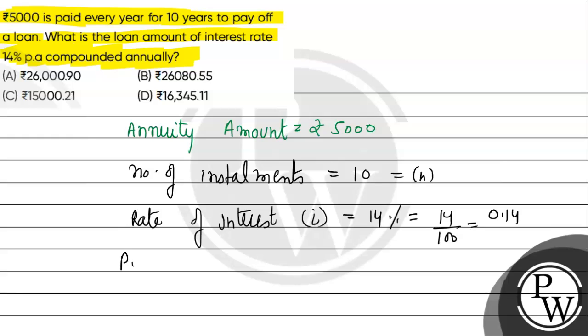Now, the present value of annuity is given by annuity amount times (1 plus i) to the power n minus 1, divided by i times (1 plus i) to the power n.